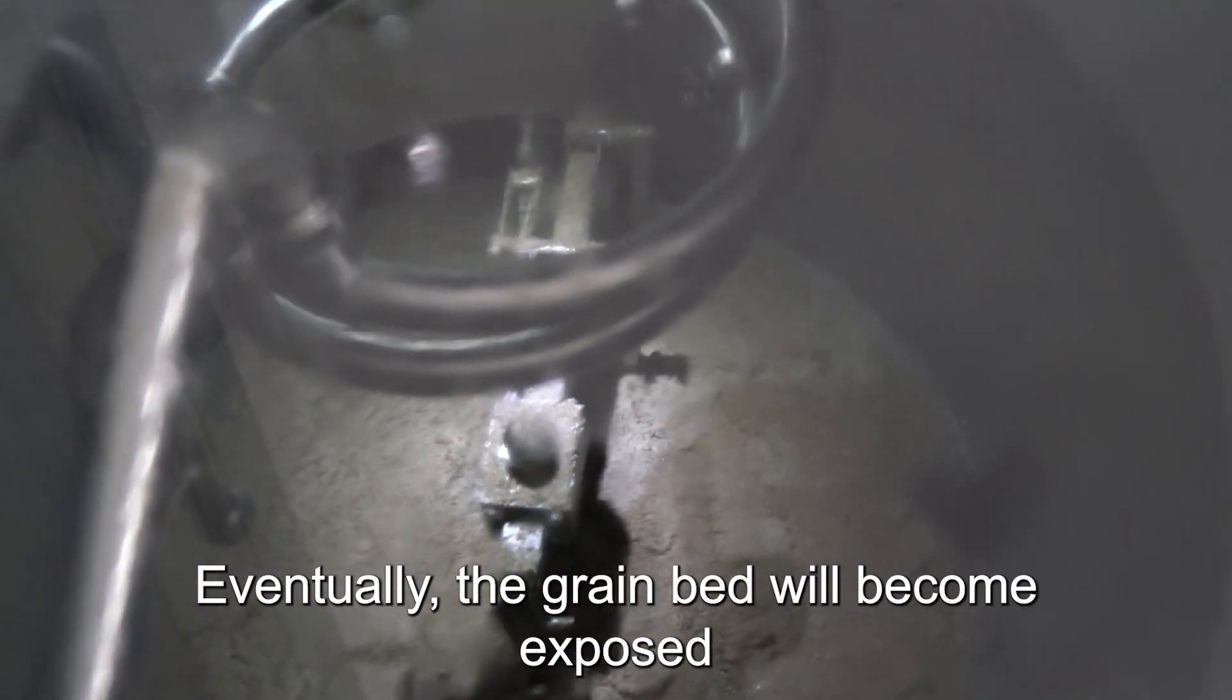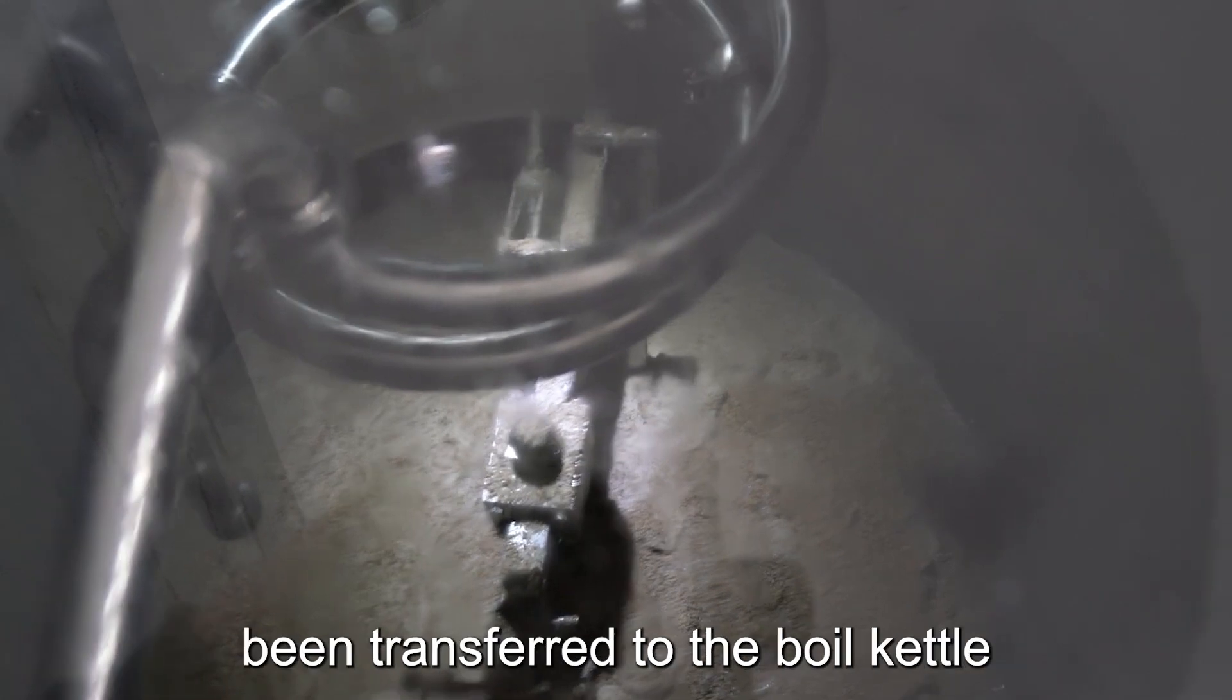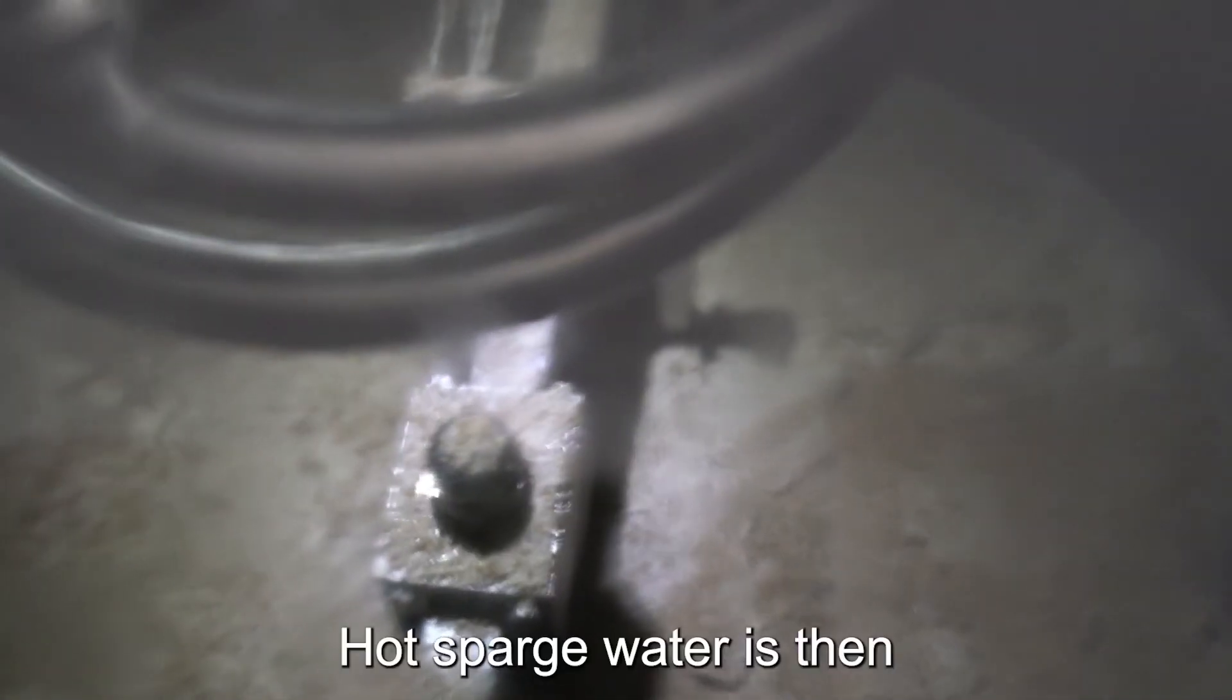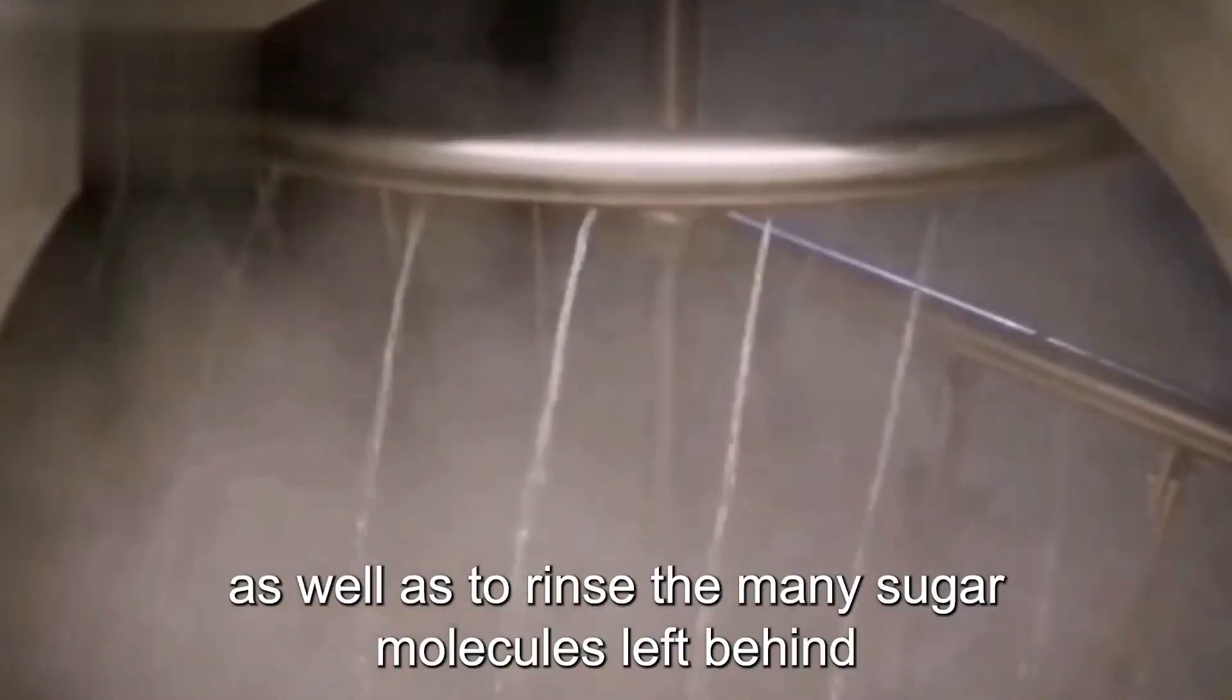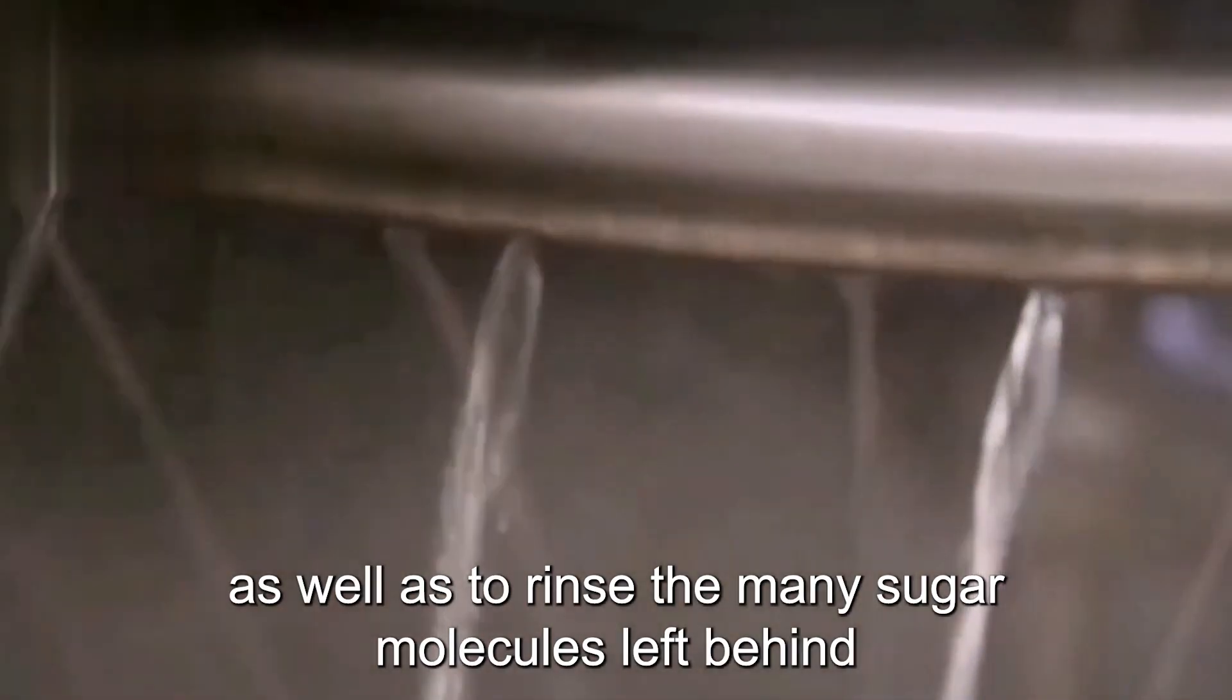Eventually, the grain bed will become exposed after much of the wort has been transferred to the boil kettle. Hot sparge water is then added on top of the grain bed to avoid air exposure as well as to rinse the many sugar molecules left behind.